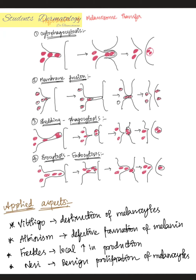The four hypotheses of melanosome transfer are: (1) Cytophagocytosis — protrusion of melanosome-containing organelles into the keratinocyte, which then engulfs them. (2) Membrane fusion — both melanocytes and keratinocytes are believed to have pores or channels connecting them through which melanosomes are transferred. (3) Shedding phagocytosis — melanosomes are engulfed by keratinocytes via phagocytosis. (4) Exocytosis-endocytosis — melanosomes exit the melanocyte by exocytosis and are then captured by the keratinocyte by endocytosis.